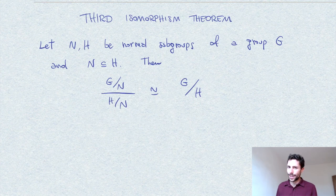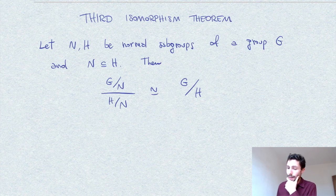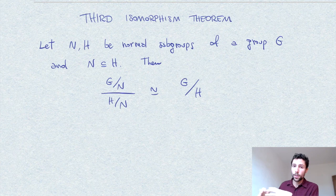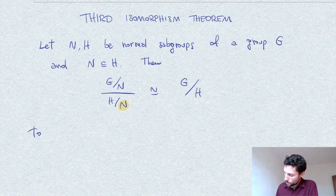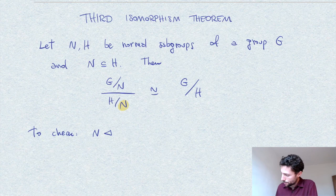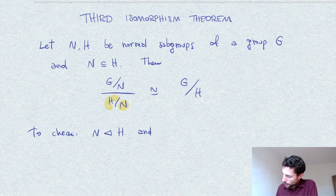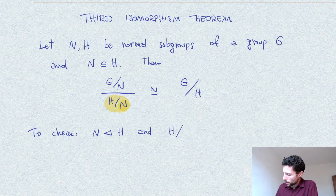Just like in the video on the Second Isomorphism Theorem, we immediately observe that all these quotients imply that some groups have to be normal in the corresponding ambient group. For example, N has to be normal inside H — which is not a priori given — and also H over N has to be normal inside this quotient group G over N.